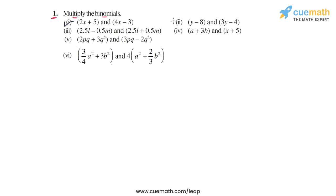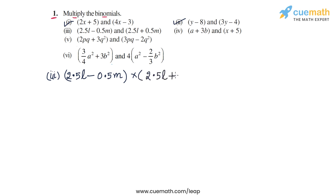We've done parts 1 and 2, and now we come to part 3. In this part we have to multiply 2.5L minus 0.5M with the binomial 2.5L plus 0.5M. We will use the distributive law, multiplying 2.5L with the second bracket, and minus 0.5M with the second bracket.